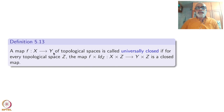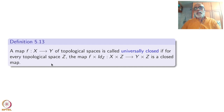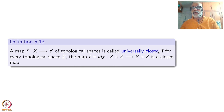Start with any continuous function f from X to Y of topological spaces. It is called universally closed if for every other topological space Z, the map f cross identity of Z from X cross Z to Y cross Z is a closed mapping. A closed map means closed subsets of X cross Z are taken to closed subsets of Y cross Z.